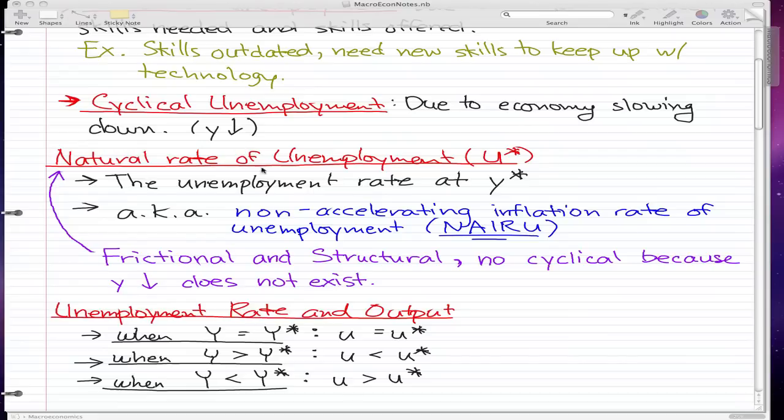The natural rate of unemployment or U star as we symbolize it, is the unemployment rate at equilibrium output and it is also known as the non-accelerating inflation rate of unemployment or if we abbreviate it, we call it NAIRU.